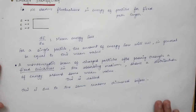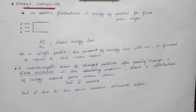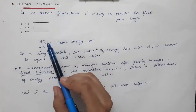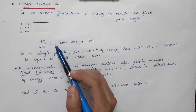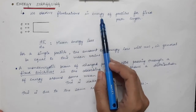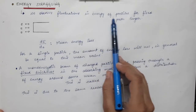Now we are going to talk about energy straggling. In range straggling, the energy of the particle becomes zero and we find the distance traveled. The distance which particles travel by losing the same amount of energy is not the same. In energy straggling, we take the same amount of path length and look at the energy of each particle after traveling that path length.